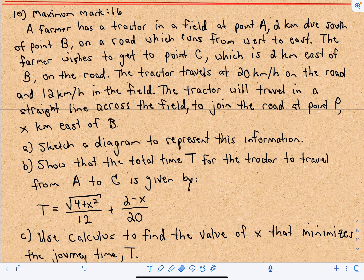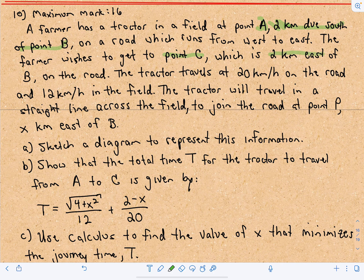This will be the last question from the sample IB exam with paper one. So this is question number 10. In this case, we've got a farmer who has a tractor in a field at a point A, two kilometers due south of a point B on a road which runs from west to east. The farmer wishes to get to a point C, which is two kilometers east of B on the road, and the tractor travels at 20 kilometers an hour on the road and 12 kilometers per hour in the field.